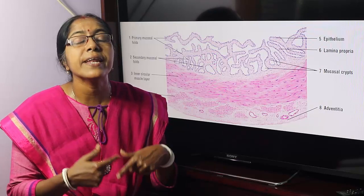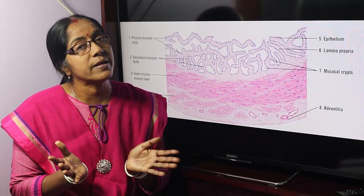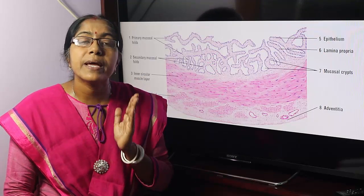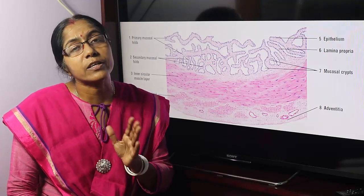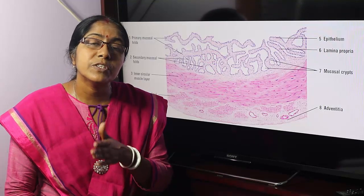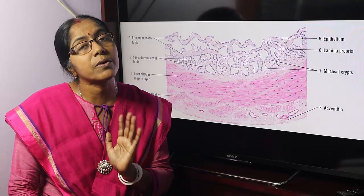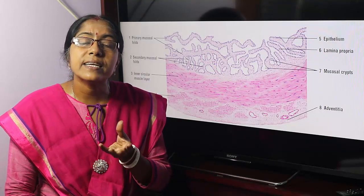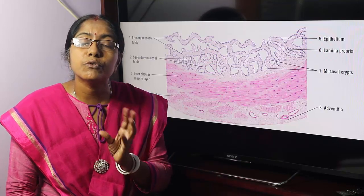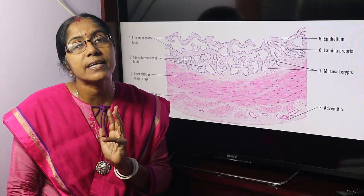The coagulating enzyme is termed vesiculase. The seminal vesicle is a paired accessory sexual gland of the male, situated at the base of the bladder. It is an exocrine gland. Its secretion contains fructose, choline, prostaglandin, and coagulating enzyme.